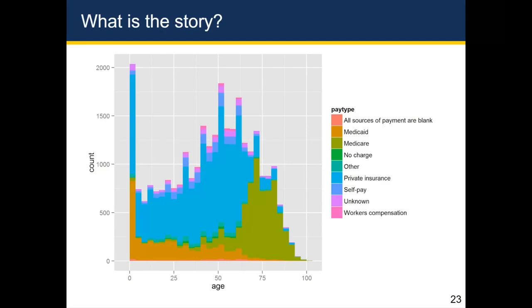I would argue that the main story being told in this plot, unfortunately, is just that there are a lot of people who have a very low age because that's where there's a big spike and the length is really long in terms of the bar. Then it looks like there's a peak in the number of people who are kind of in their 50s and 60s.